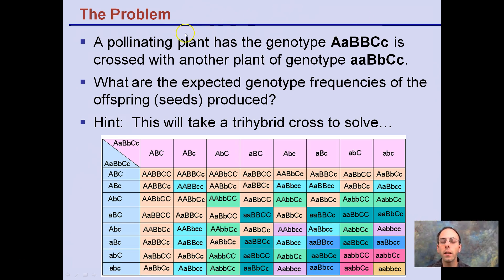So our problem is, a pollinating plant has a genotype big A, little a, big B, big B, big C, little c, is crossed with another plant with a genotype which is homozygous recessive for A, heterozygous for B, and heterozygous for C. So the question is, what's the expected genotype frequencies of the offspring or seeds produced? This is going to take a trihybrid cross because there's three different traits looking at here. If you were to do a Punnett square, it'd look like this very complex mess here. Your odds for error are very high and we want to try to avoid that.